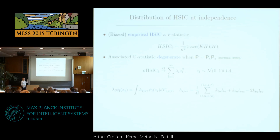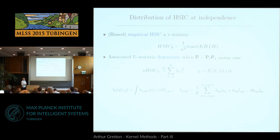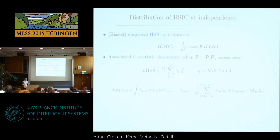This slide is deliberately very aggressive-looking. For MMD, under the assumption that P and Q were the same, the distribution was an infinite weighted sum of chi-squares. This is also true for HSIC, but the eigenvalue problem you have to solve is even nastier, because you've constructed one of your distributions by scrambling up the Xs and Ys from your dependent variables. I take each observed X from my dependent X-Y pairs and associate it with all possible Ys that are not the original Y — that's my way of creating the independent pairs.